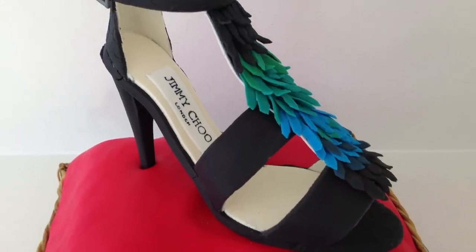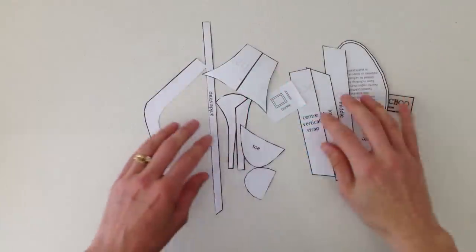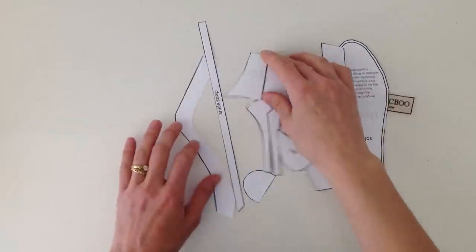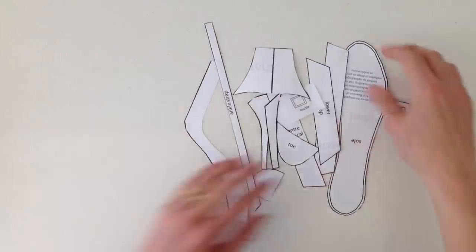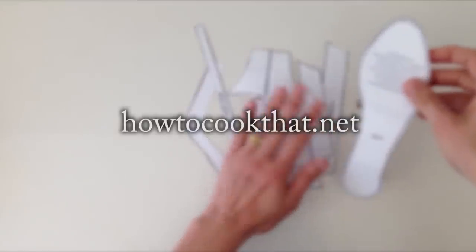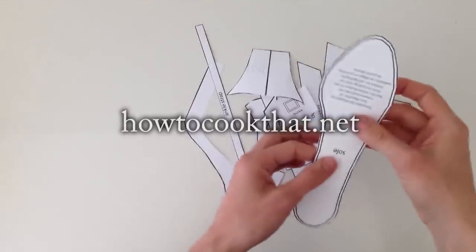I will show you how to make the shoe first and then the pillow. The first thing you need to do is cut out your shoe template and that is available on the website howtocookthat.net. There is a link in the description below this video.